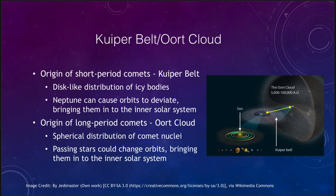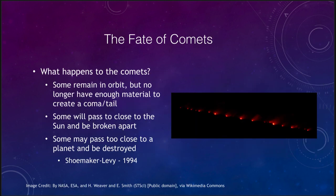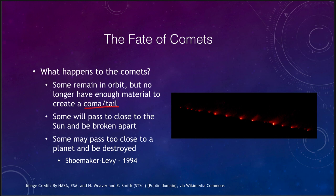So what happens to comets? Many of them will remain in orbit but eventually just fade out. They'll keep coming back, but they do not have enough material to create a coma and a tail. So there could be essentially dead comets still orbiting. They come close enough to the sun but there's not enough material left to be vaporized, so we won't see a coma or tails — the comet will be essentially invisible, just an icy rocky ball orbiting around the sun.